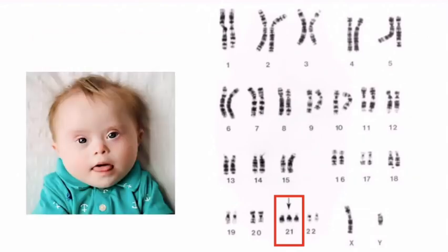Yes, you are right. The baby has three copies of chromosome 21. This disorder is known as Down syndrome. The affected person has a distinct facial appearance, intellectual disability and developmental delay.